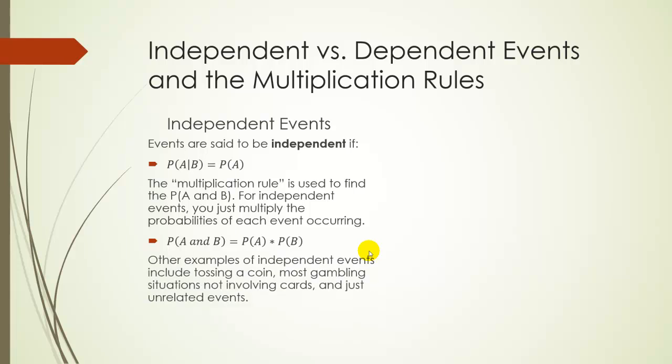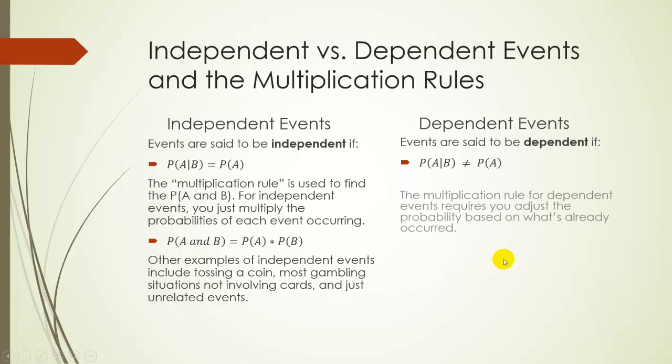For dependent events, things are a little bit more complicated. So for dependent events, those are defined where the probability of A, given that B has occurred, is not equal to the probability of A. This is going to change our multiplication rule.